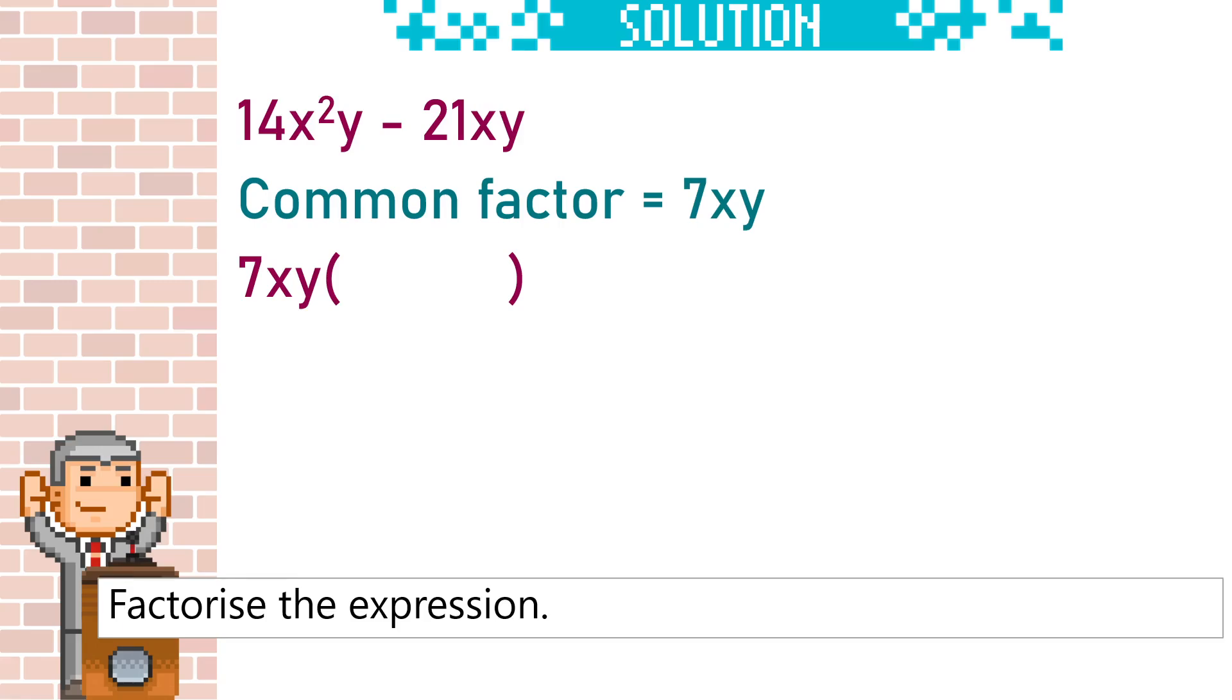Minus 21 divided by 7 is minus 3. So we've got to take away 3. And then the xy is completely divided out. So it's just going to be 2x minus 3.